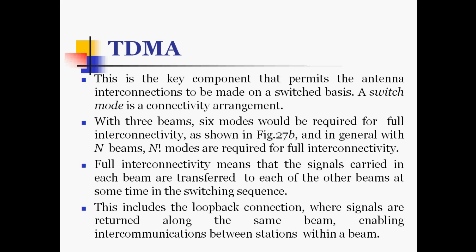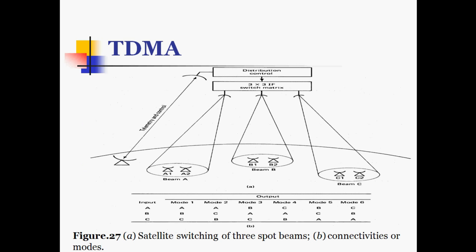Full interconnectivity means that signals carried in each beam are transferred to each of the other beams at some time in the switching sequence. This includes loop-back connections where signals are returned along the same beam, enabling intra-beam communications between stations. The satellite switching of 3 spot beams is shown with connectivity for inputs A, B, C across modes M1 through M6, with a 3×3 switch matrix and telemetry and control for the earth station and satellite.